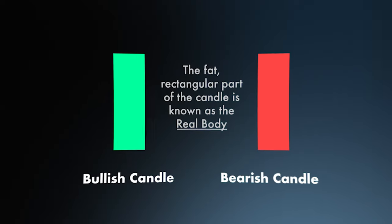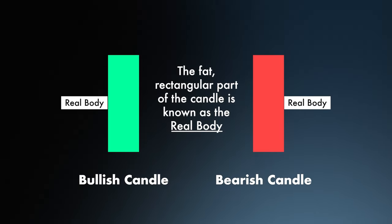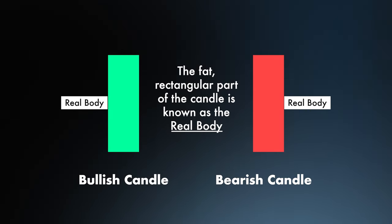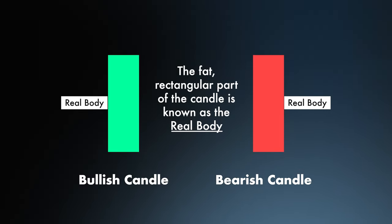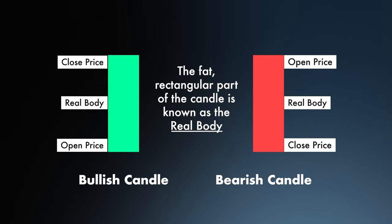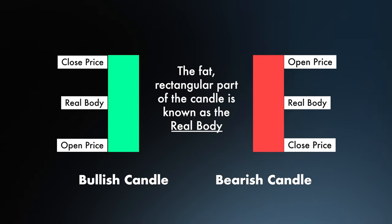Within the candles themselves we can gather more information. The fat rectangle part of any candle is known as the real body. What the real body shows us is the specific price action relating to the opening and the closing price. So for the bullish candle, the bottom of the candle body shows the opening price and the top of the candle's body shows us the closing price. Bearish candles are reversed, so the top of the body is the opening price and the bottom of the body is the closing price.